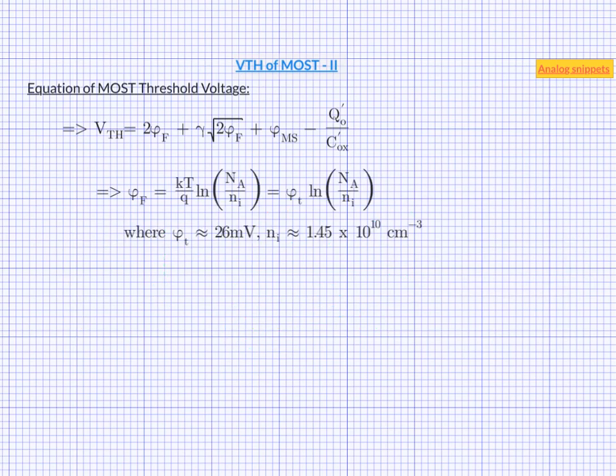Phi f is given by this rather simple equation. This equation contains 3 terms. Phi t, which is the familiar thermal voltage, which is around 26 millivolt at the room temperature. N a, which is the substrate doping concentration. And N i, which is the carrier concentration in pure or intrinsic silicon. L n or ln stands for natural logarithm or logarithm with the base e.